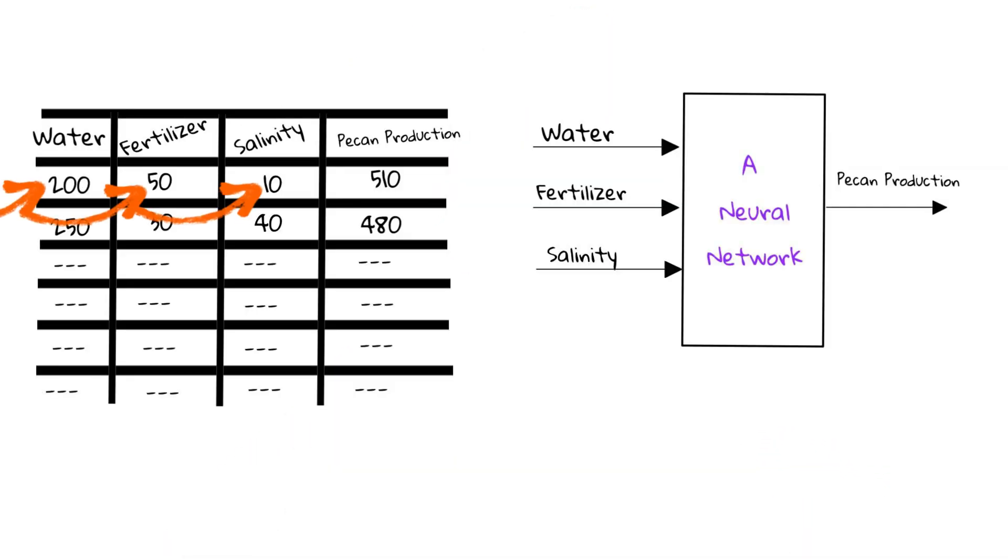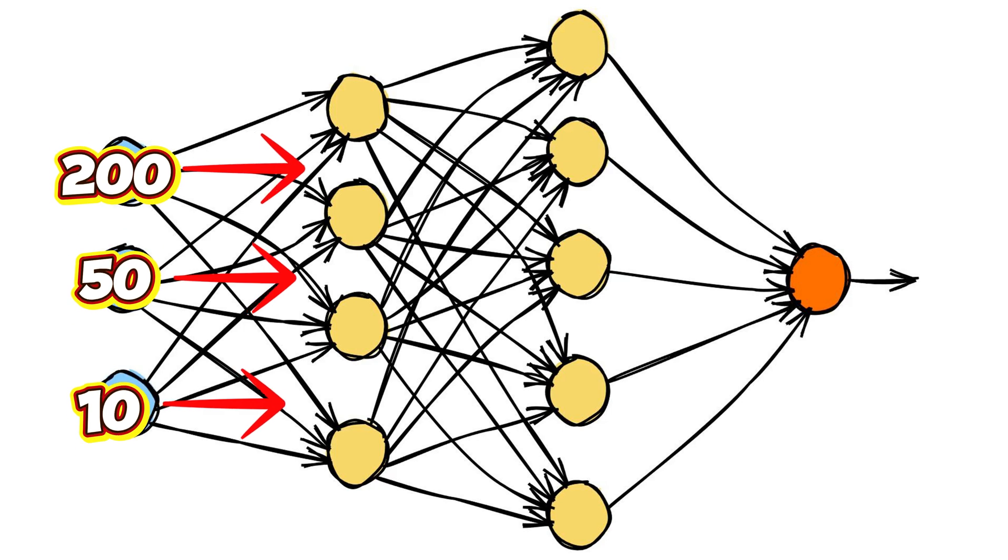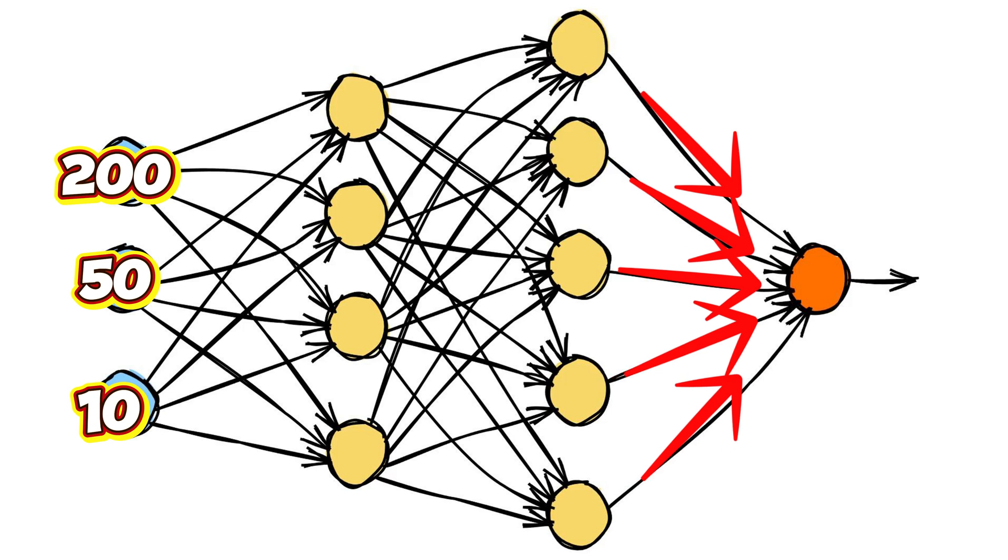Let us say that we have these three values for water, salinity, and fertilizer. These three numbers go through the layers. Calculated values come out of each neuron of the first layer. Then the calculated values become input for the neurons in the second layer. So and so forth. Finally, we have a calculated output from the output layer.